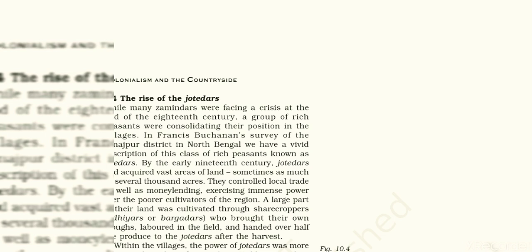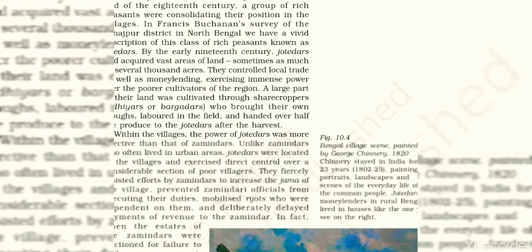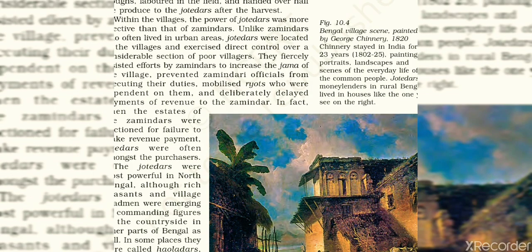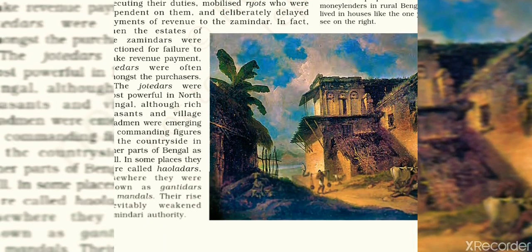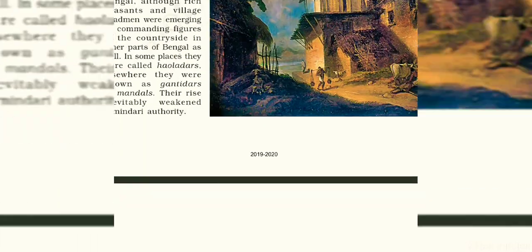When the Company attempted to control the zamindars over their rights, the zamindars resisted. As a result, reports were prepared and a report like the Fifth Report was introduced in the British Parliament. Several changes were introduced in the sphere of land revenue during the 19th century.